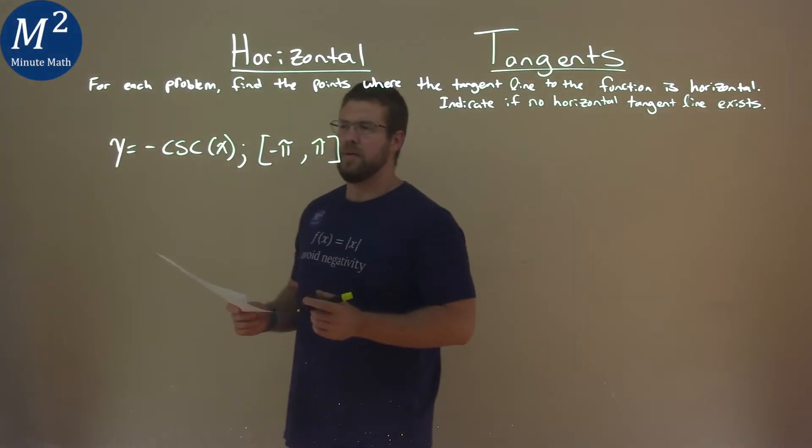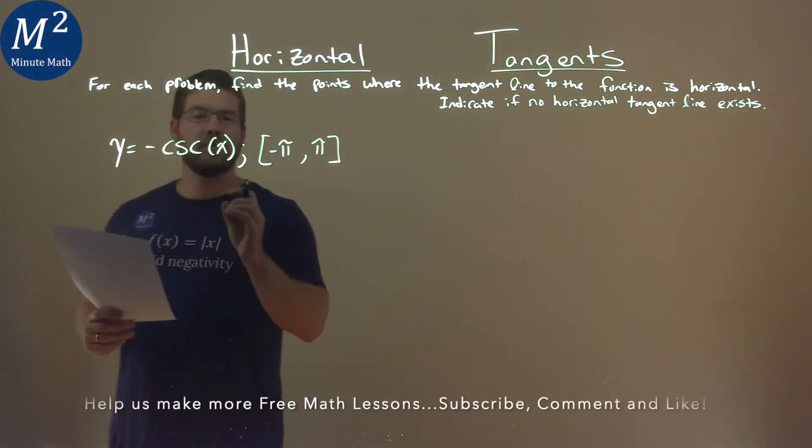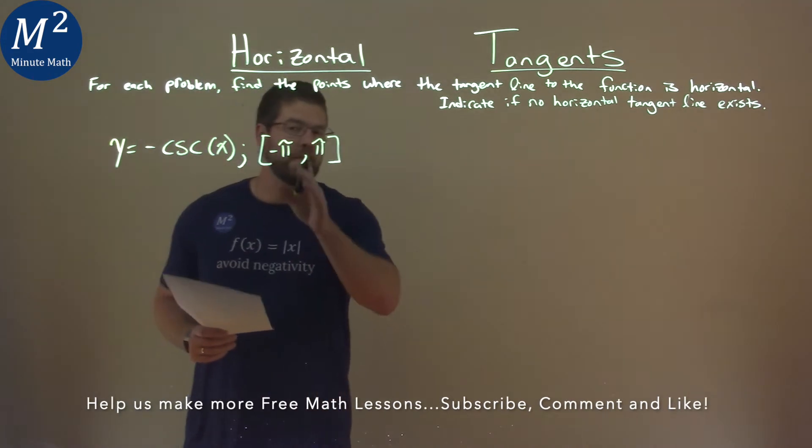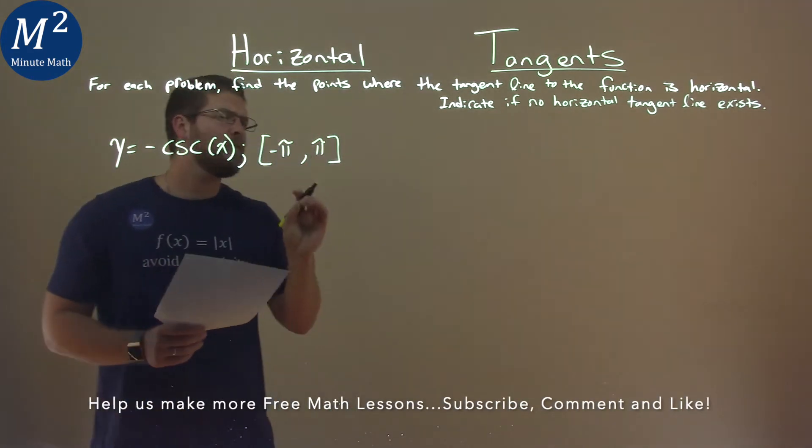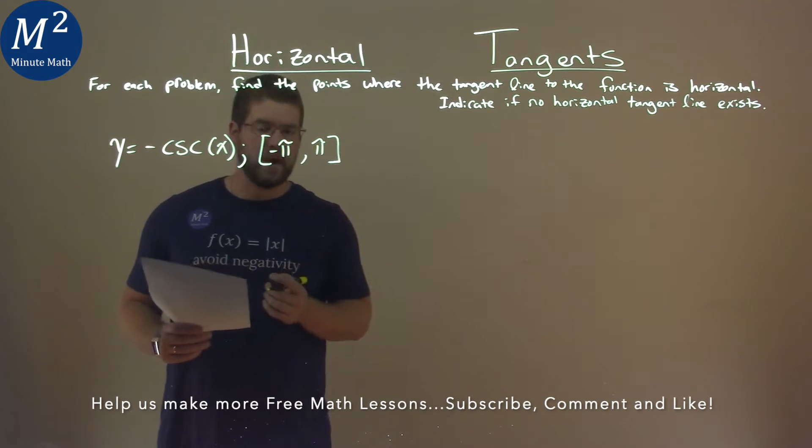We're given this problem right here: y equals negative cosecant of x on the interval from negative pi to pi, and we're going to find the points where the tangent line to the function is horizontal.